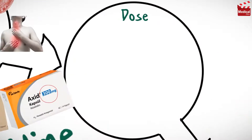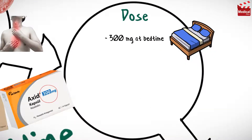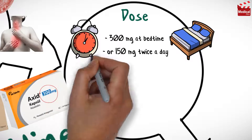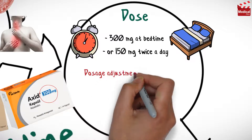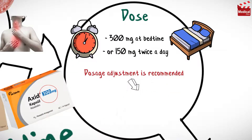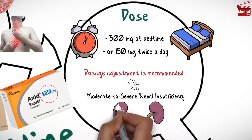The usual dose of nizatidine is 300 mg at bedtime, or 150 mg two times per day. Dosage adjustment is recommended in case of moderate to severe renal insufficiency.